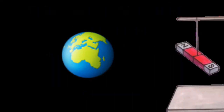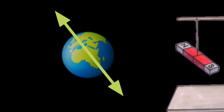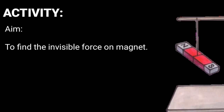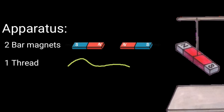We saw that a suspended bar magnet always comes to rest in the north and south direction. Why does it come to rest in that particular direction only? What force is acting on it? To understand this, we have to do an activity. You need the following apparatus: two bar magnets and one thread.